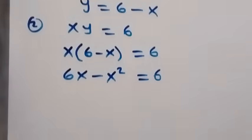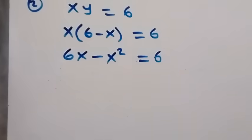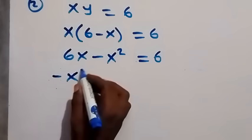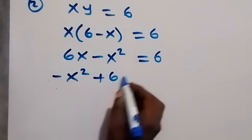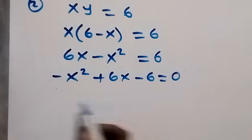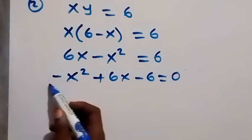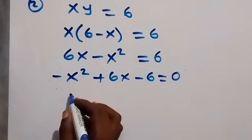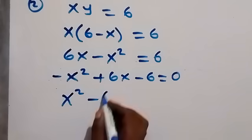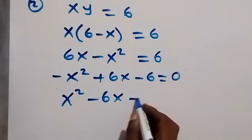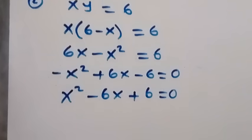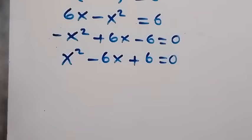Rearranging and bringing six to this side, we have negative x squared plus six x minus six equals zero. Multiplying through by negative one, this becomes x squared minus six x plus six equals zero, which is a quadratic equation.